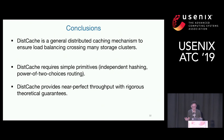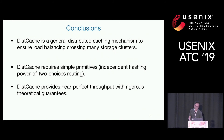In conclusion, DistCache is a general distributed cache mechanism to ensure load balance across multiple storage clusters. It only requires very simple primitives — independent hashing and power-of-two choices for routing — and provides near-perfect throughput with rigorous theoretical guarantees. I'm happy to take questions.